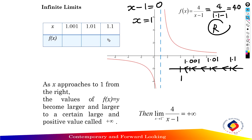So the first value gives f(x) = 40. Then when x = 1.01, f(x) = 400. And when x = 1.001, f(x) = 4000.